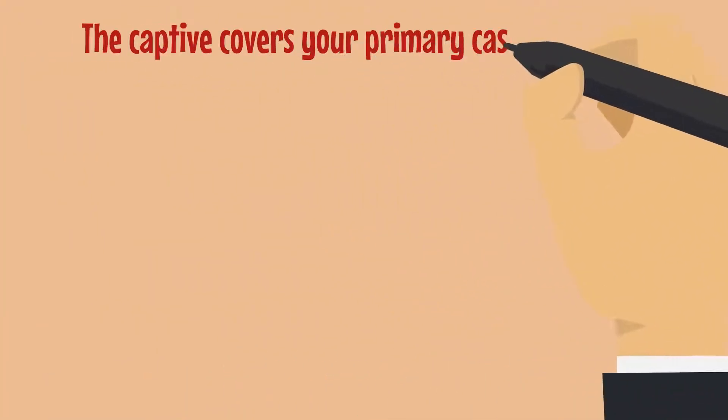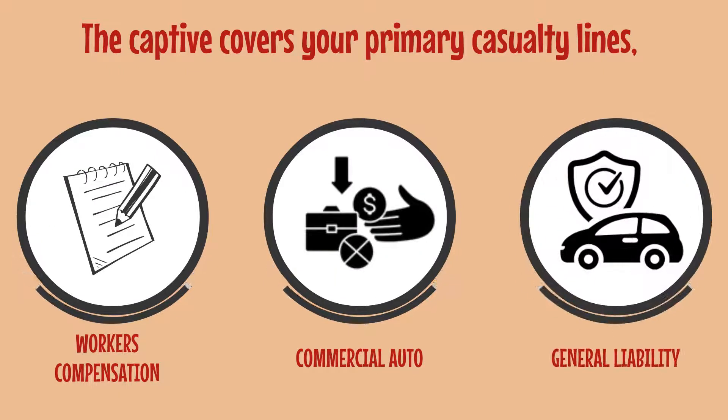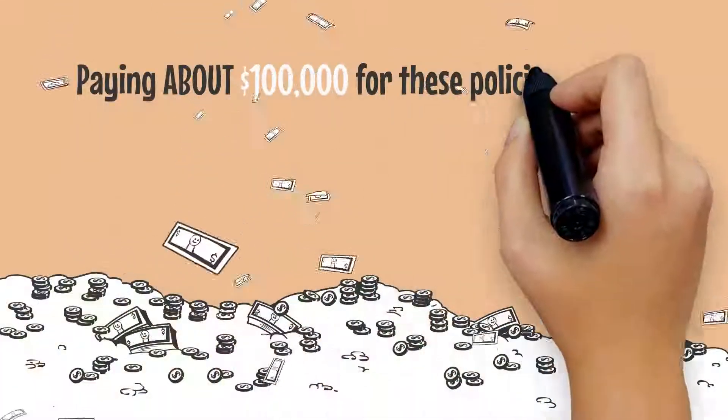The captive covers your primary casualty lines: workers' compensation, auto, and general liability. To qualify, you typically need to be paying about $100,000 for these policies combined.